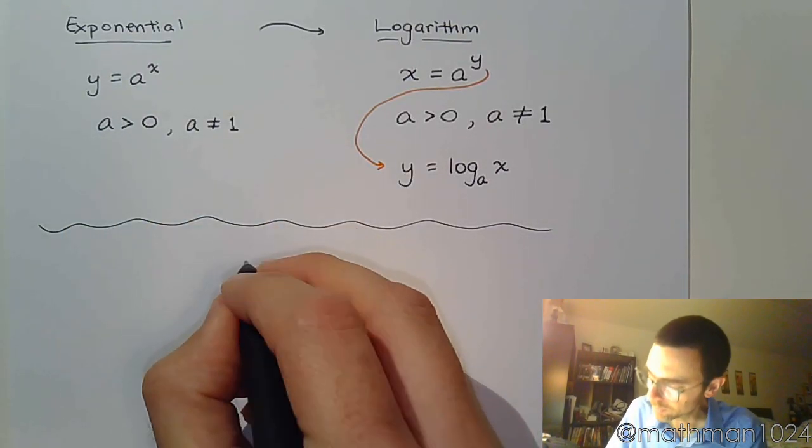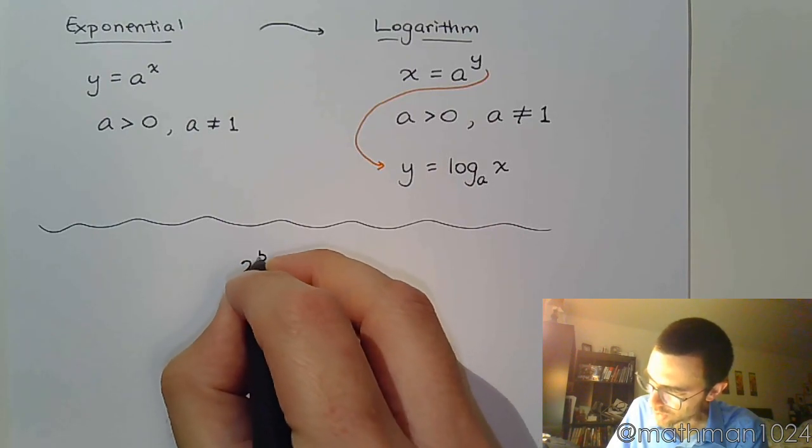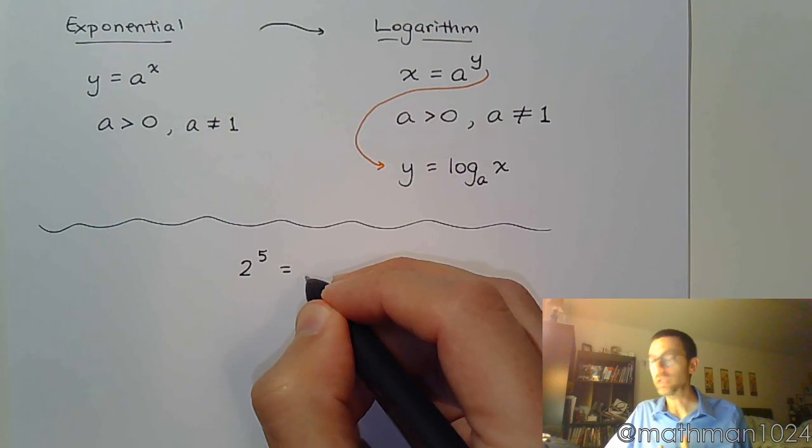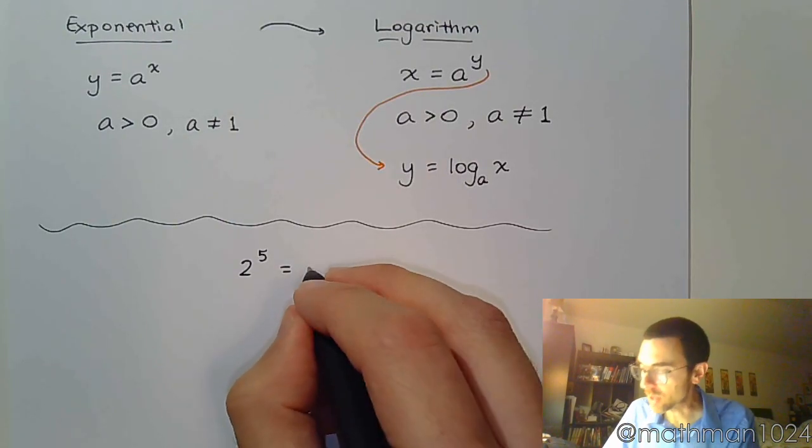If I say 2 to the 5th power, we know what that expression means and we can calculate that and 2 to the 5th power is 32.